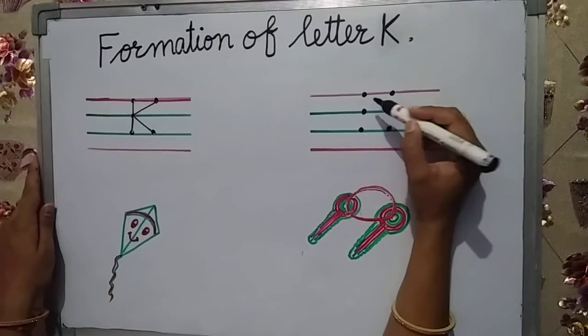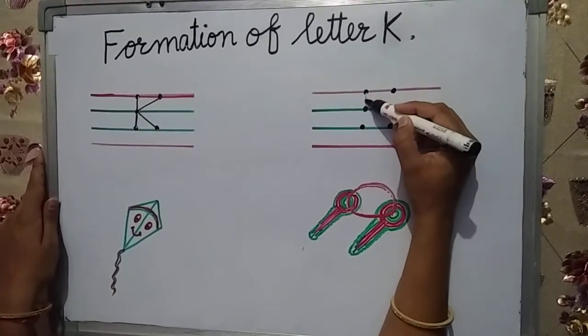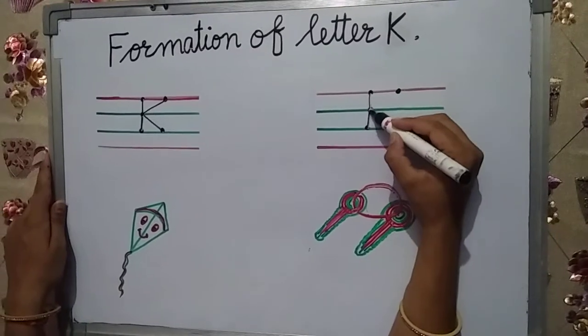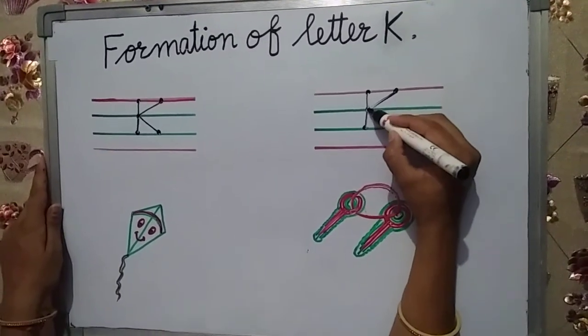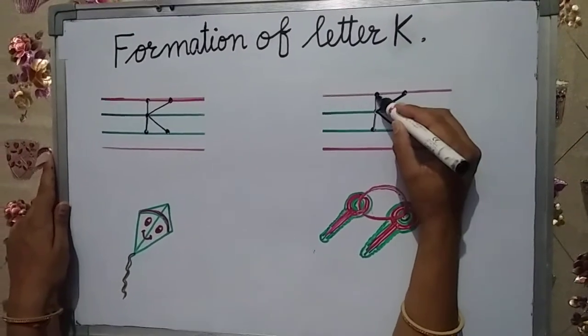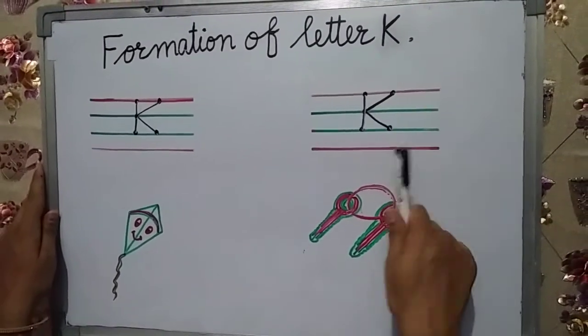Now, try again. A standing line. And, put one dot here and a slanting line. Again, a slanting line. This is the letter K.